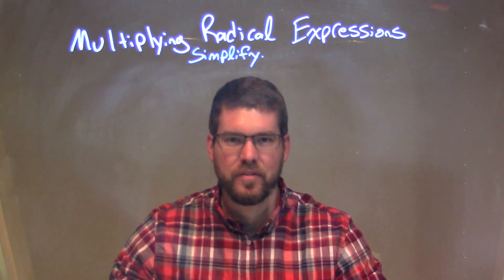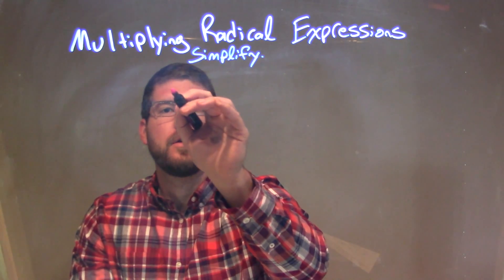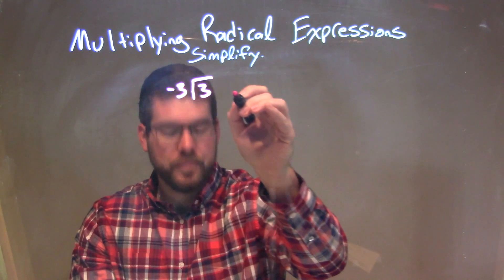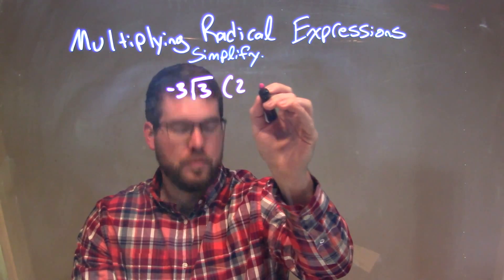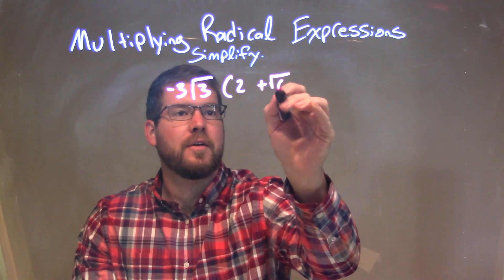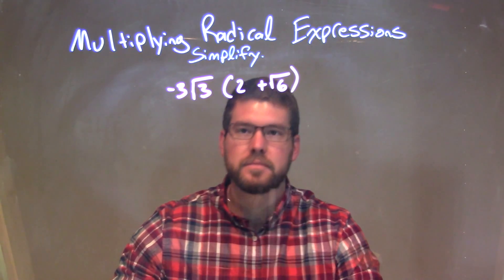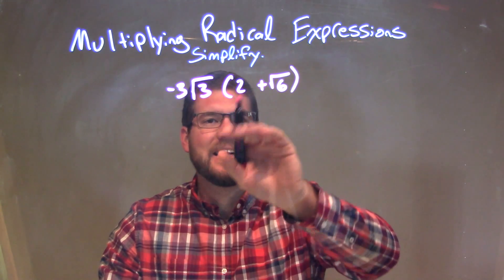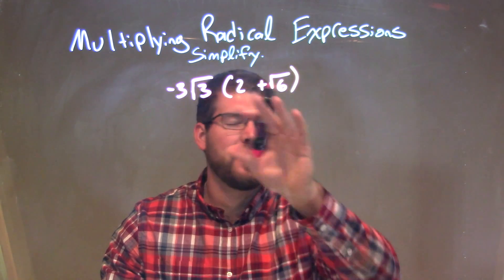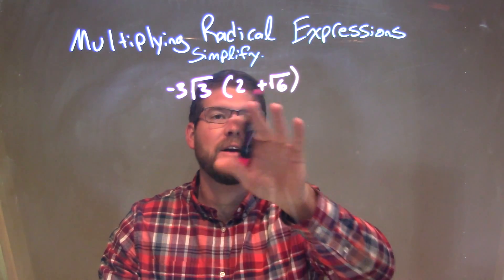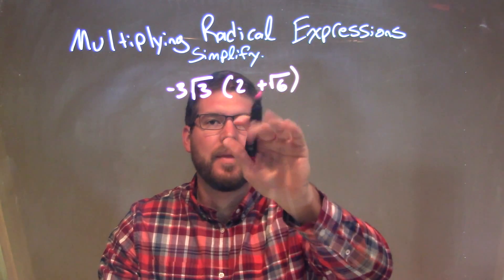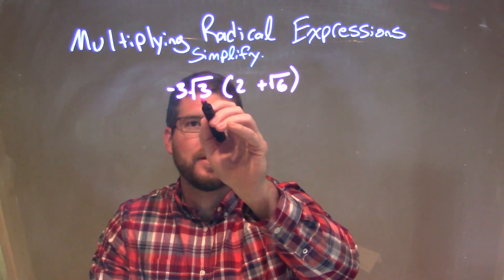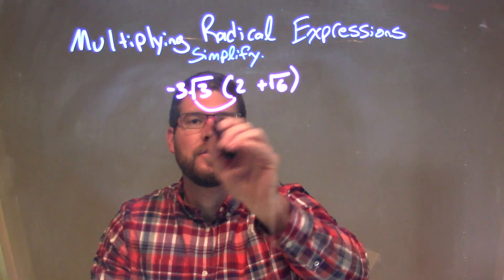So if I was given this expression: negative 3 times the square root of 3 times 2 plus the square root of 6. Well, what I want to do is first look at the square root. Can I simplify anything in the parentheses? No, I can't combine anything there. So I'm going to distribute the square root of 3 to both parts.